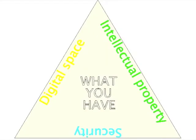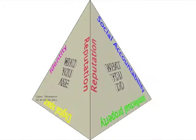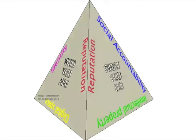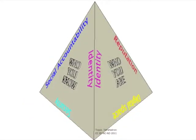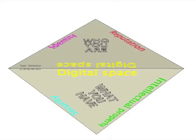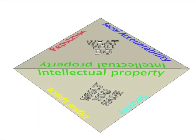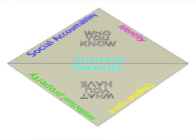On this tetrahedron framework, the intersections between these four main elements are represented as follows. Between who you are and what you do is reputation. Between what you do and who you know is social accountability. Between who you know and who you are is identity. Between who you are and what you have is your digital space. Between what you do and what you have is intellectual property. Between who you know and what you have is security.